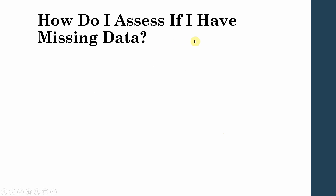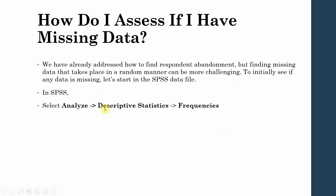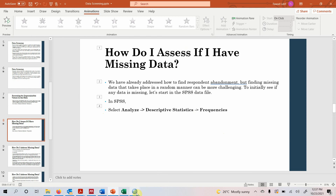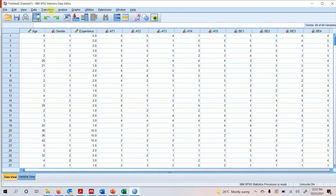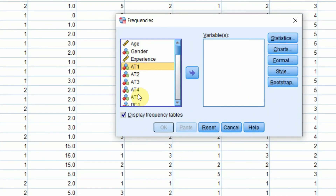To assess if you have missing data: we have already addressed how to find respondent abandonment, but finding missing data that occurs in a random manner can be more challenging. To initially see if there is any missing data, use SPSS — go to Analyze > Descriptive Statistics > Frequencies. Let's go to our data and see if there are any missing values, selecting the relevant variables or indicators.